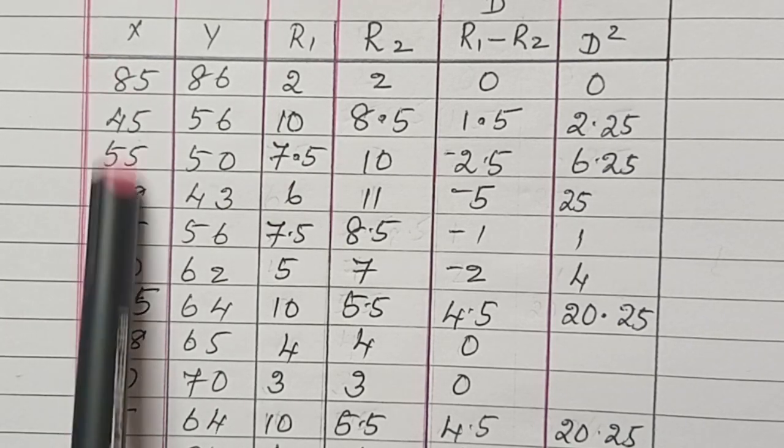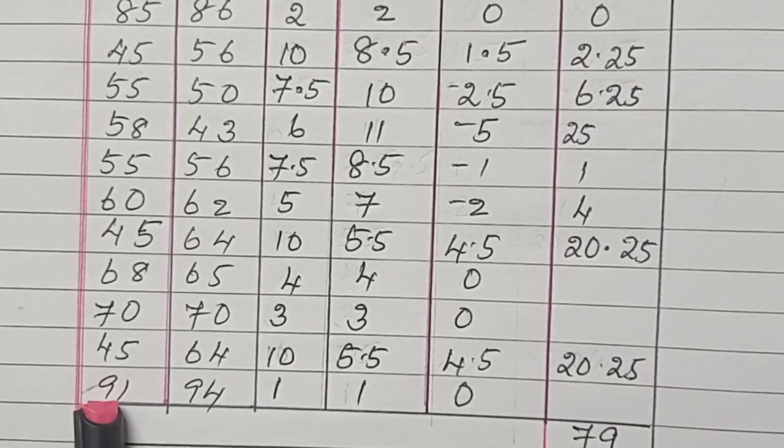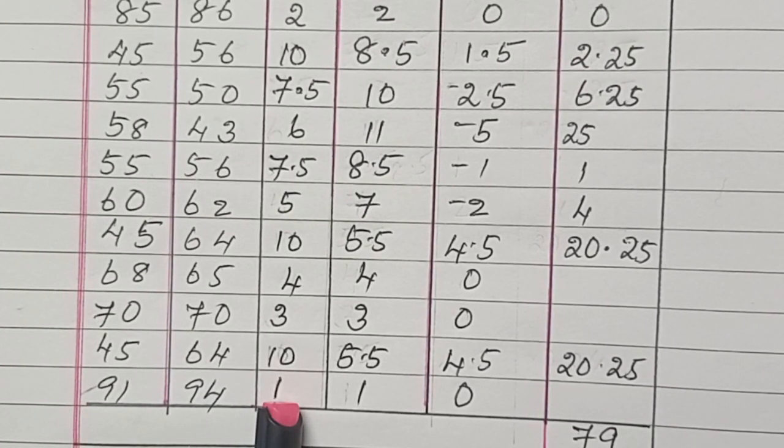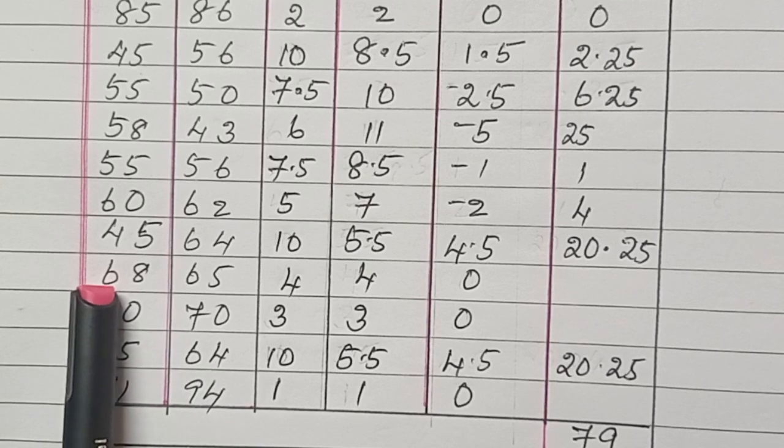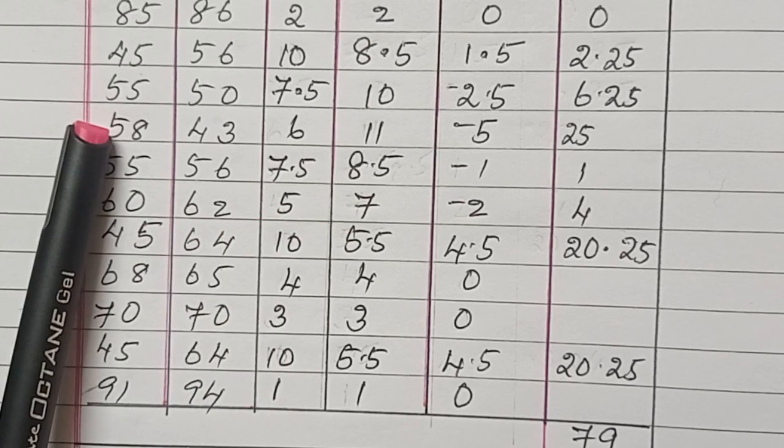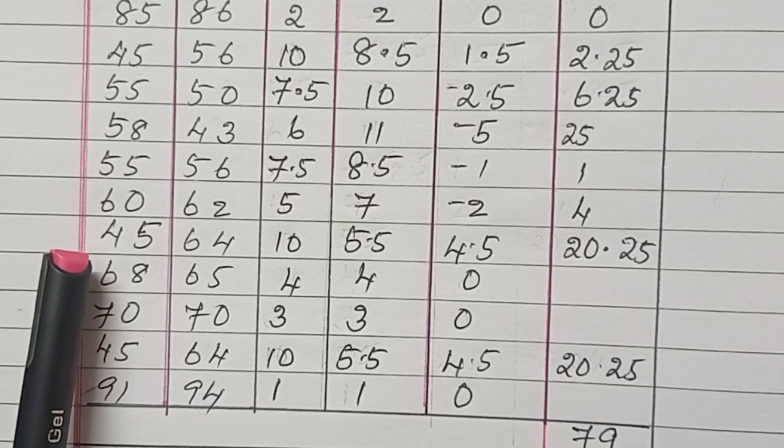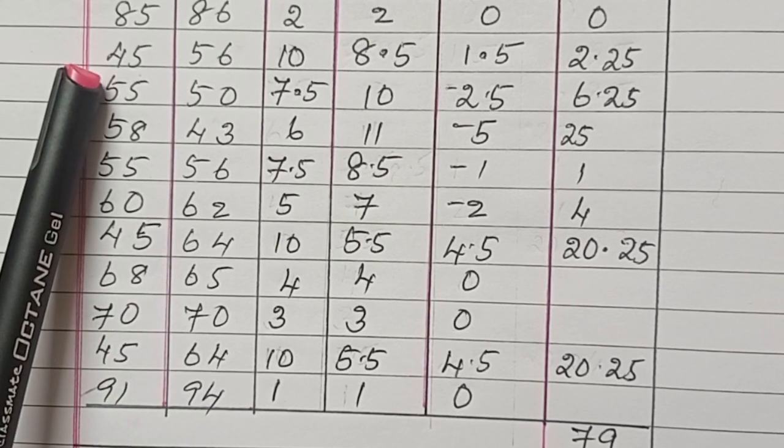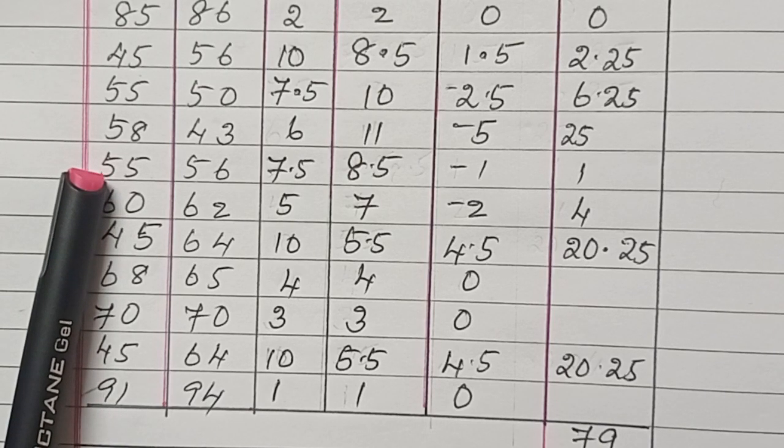This is the variable X. First rank goes to 91, so I'm writing 1. Second rank 85, third, fourth, and fifth rank is for 60. Then sixth rank is for 58. The seventh rank is going to 55. 55 is repeating for 2 persons.